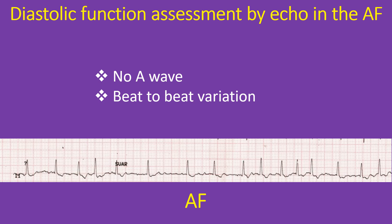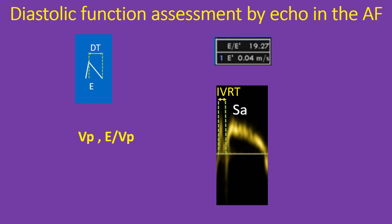In atrial fibrillation, the absence of atrial contraction and the A wave makes this assessment impossible. Moreover, variation in the cardiac cycle causes beat-to-beat changes in ventricular relaxation. Echo parameters useful in the presence of AF include Mitral E wave DT, E by E prime, Colour M mode-derived Vp (early diastolic flow propagation velocity) and E by Vp, peak pulmonary vein diastolic flow velocity, pulmonary vein diastolic wave DT, peak acceleration of the mitral E wave, IVRT, and the ratio of IVRT to the time between onsets of E and E prime waves.